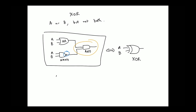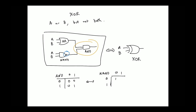Let's just write the truth table to remind ourselves. The AND truth table: both have to be on for the output to be on. And if that's the AND gate's truth table, then the NAND gate truth table would be the opposite of it — the zeros turn into ones and the ones turn into zeros, because it's a logical negation.